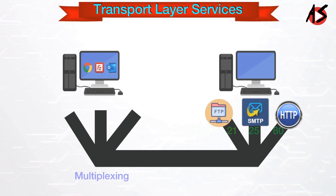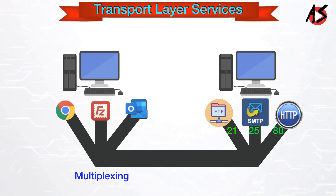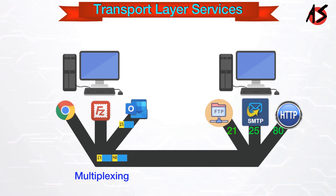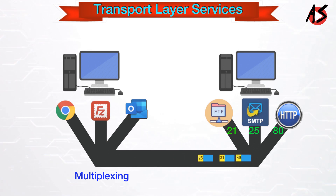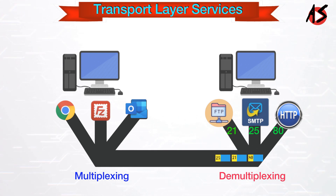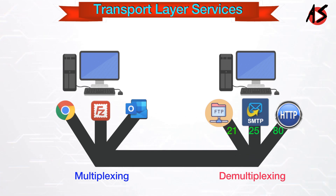Multiplexing allows simultaneous use of different applications over a network running on a host. The transport layer provides this mechanism, which enables sending packet streams from various applications simultaneously over a network. It accepts packets from different processes differentiated by their port numbers and passes them to the network layer after adding the proper header. Similarly, demultiplexing is required at the receiver side — the transport layer receives segments from the network layer and delivers them to the appropriate process running on the receiver's machine.